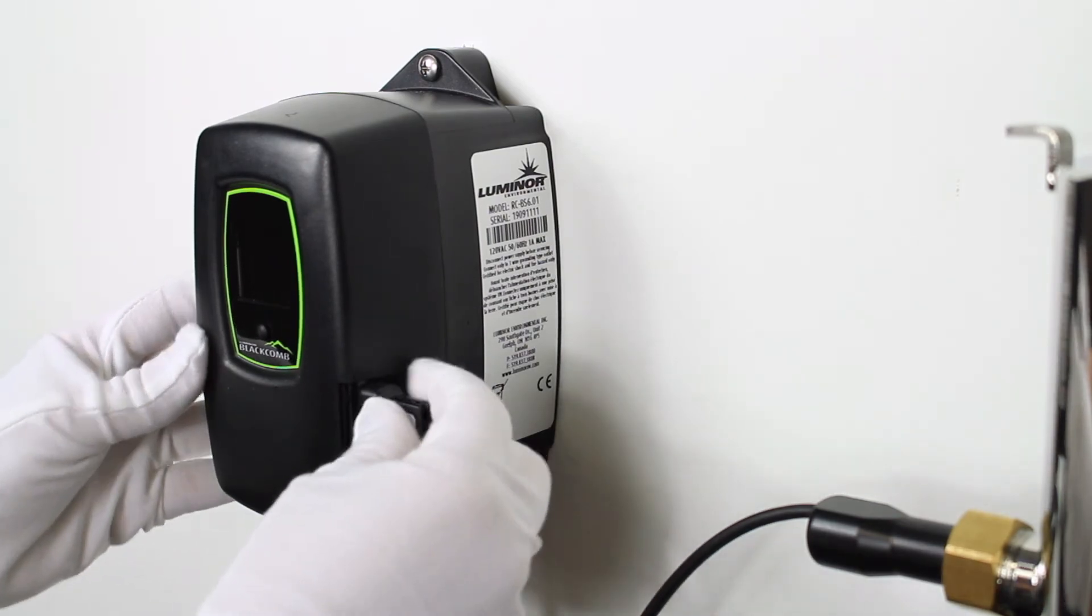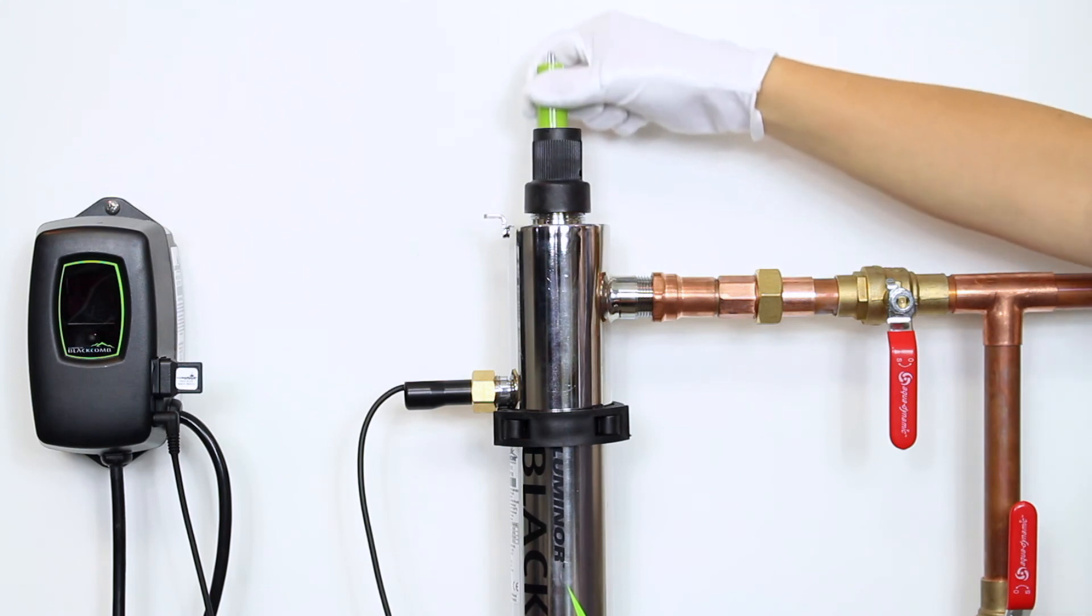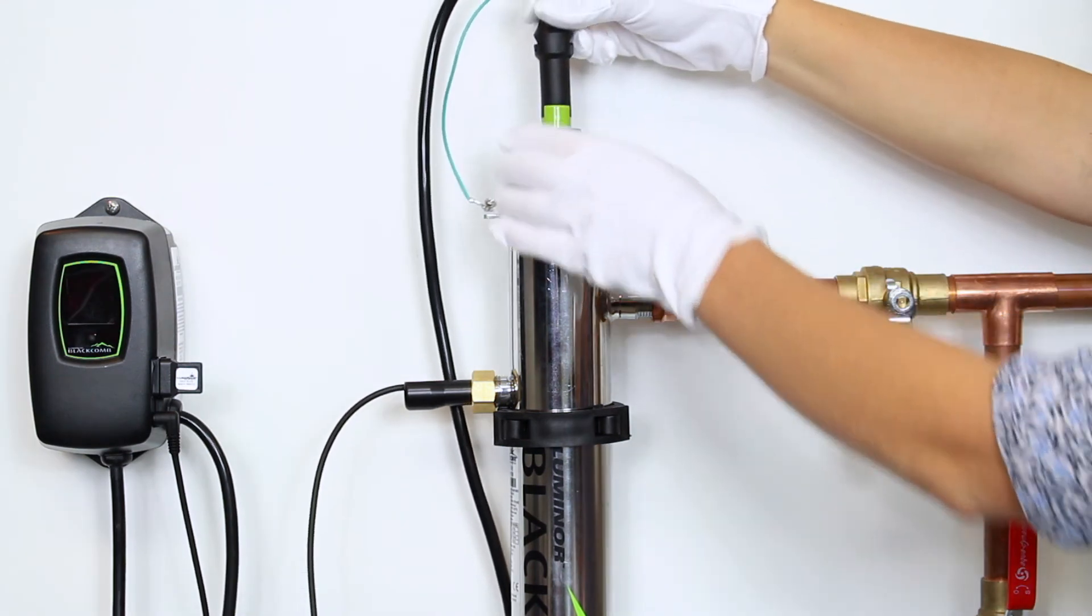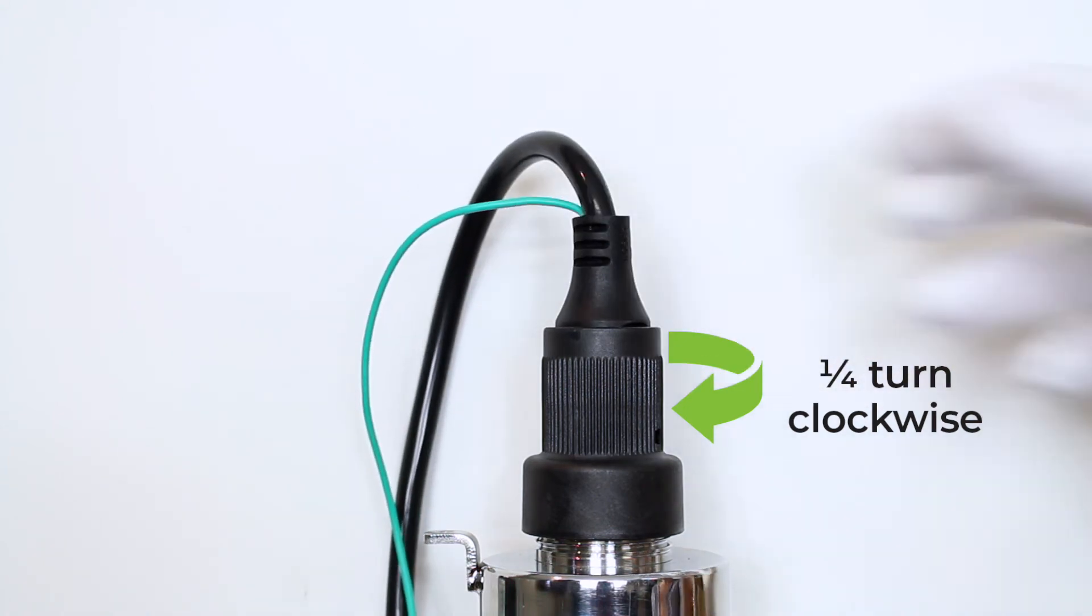Install the lamp key. Carefully place the lamp into the sleeve and connect it to the lamp connector. Push in into the gland nut and twist one quarter turn clockwise to lock it into place.